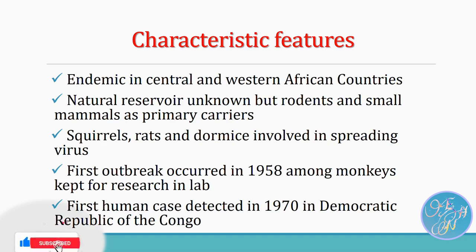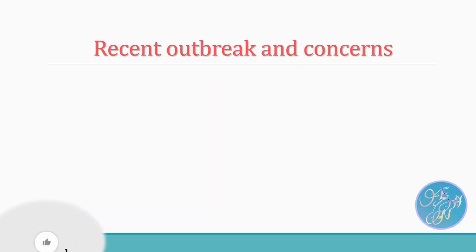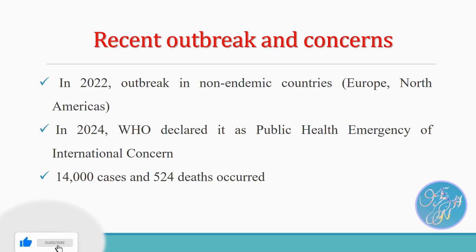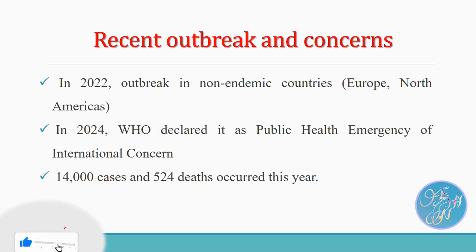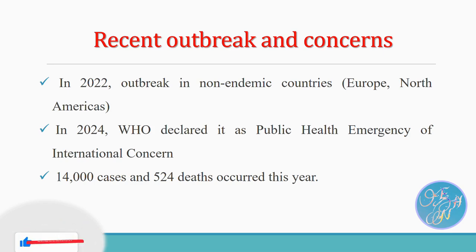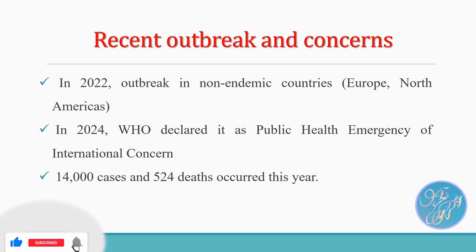Fast forward to 2024, and MPOX is back in the spotlight. This year, the World Health Organization has declared MPOX a public health emergency of international concern. There have been over 14,000 reported cases globally, with a significant number of deaths, particularly in African countries like the Democratic Republic of the Congo and neighboring regions. What's especially concerning is the emergence of new virus strains, known as clades, which are spreading more rapidly and can be more severe. Clade 1b, for example, has shown a higher rate of transmission, making international cooperation essential to controlling these outbreaks.